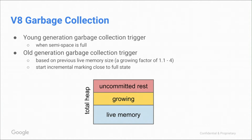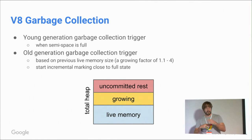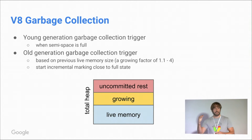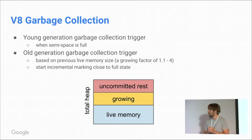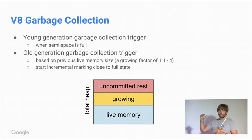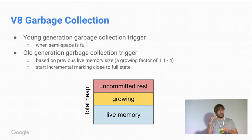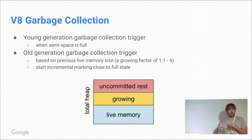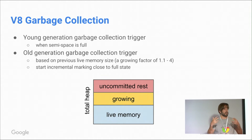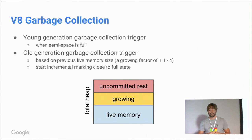How does the heap growing and garbage collection triggering mechanism work? For the young generation, whenever a semi-space fills up, that triggers the collection. For the old generation it's different — we set a limit on the objects allocated in the old generation. When we reach that limit, we trigger incremental marking. We base that limit on a growing factor chosen by various heuristics, for example the allocation rate.